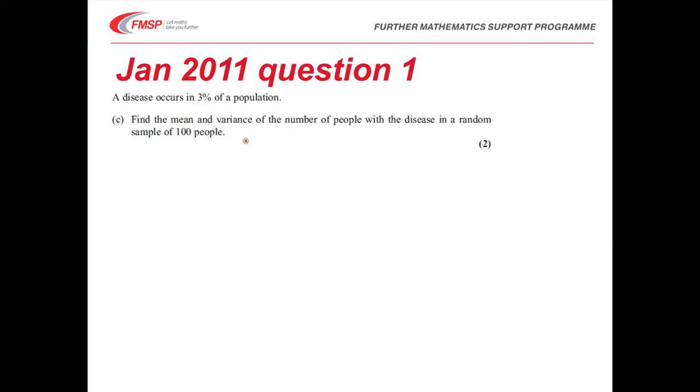We're then asked to find the mean and variance of a sample of 100 people. It's worth now just relabeling. We've got 100 people and again a probability of success still of 0.03. For a binomial, the expected value is simply N times P. That's 100 times 0.03, which will trigger a B mark for this particular question, which is 3.